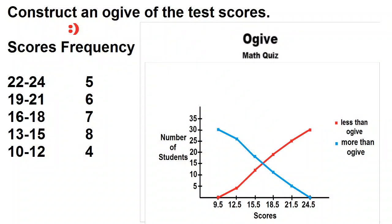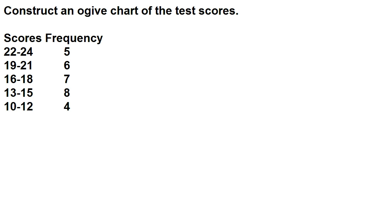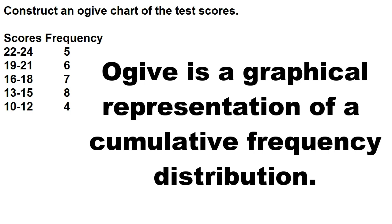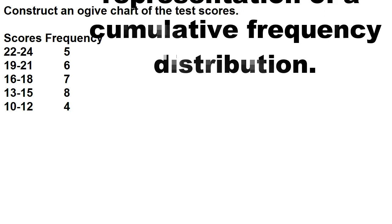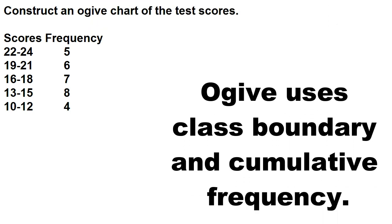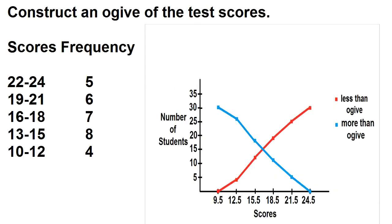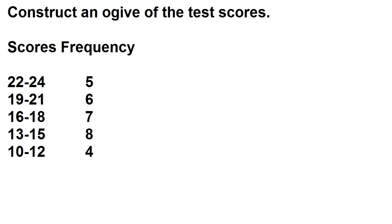Let's construct an ogive of the test scores. An ogive is a graphical representation of a cumulative frequency distribution. It uses class boundaries and cumulative frequencies. To construct an ogive, we need the values of the class boundaries and the values of the cumulative frequencies.